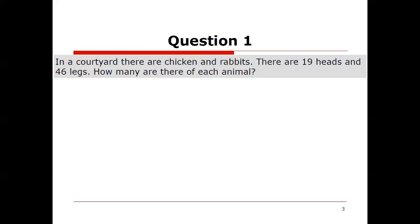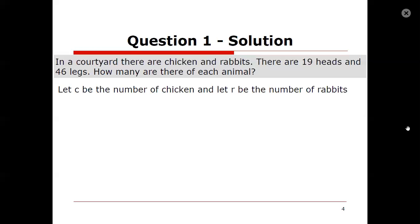Well we don't know a lot about this. We don't know how many chickens, we don't know how many rabbits. So mathematicians when we don't know something we assign what we call a variable to it or a letter. So let c be the number of chickens and let r be the number of rabbits.